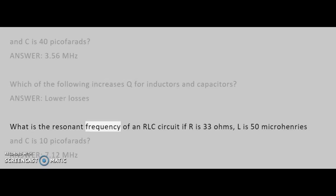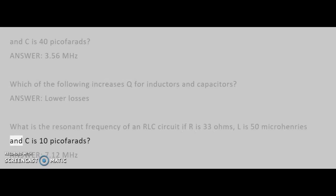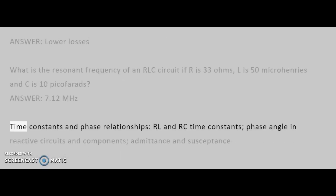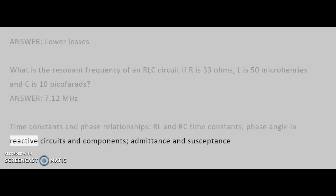What is the resonant frequency of an RLC circuit if R is 33 ohms, L is 50 microhenries, and C is 10 pF? Answer: 7.12 MHz. Time constants and phase relationships group covers: RL and RC time constants, phase angle in reactive circuits and components, admittance and susceptance.